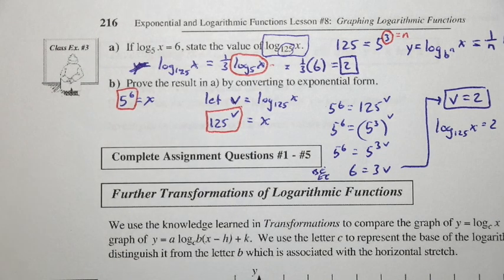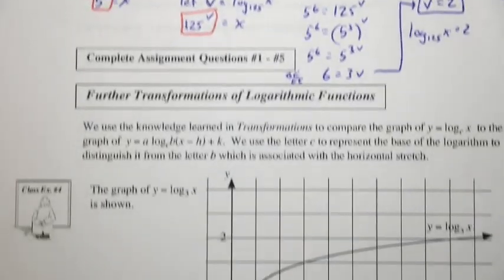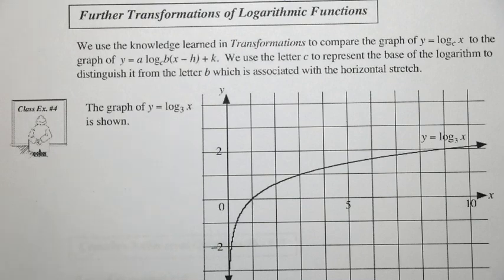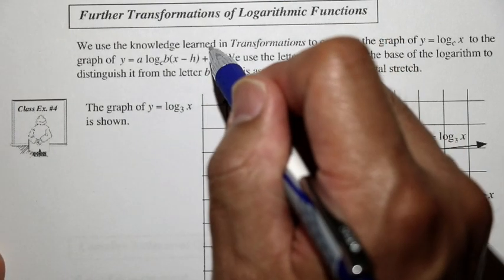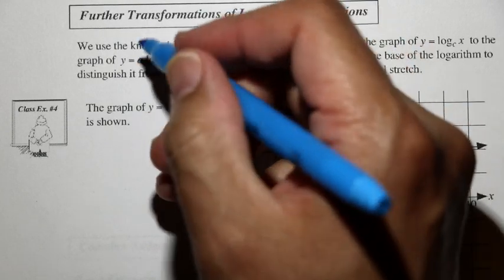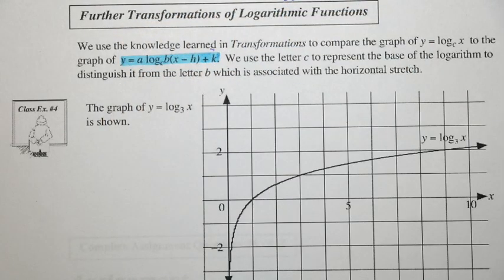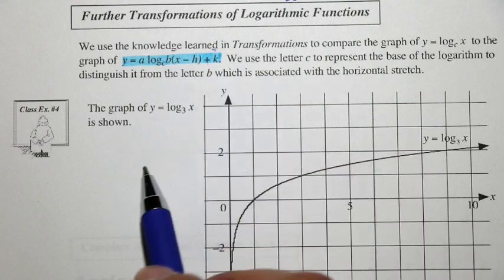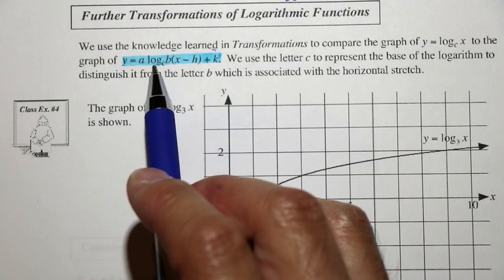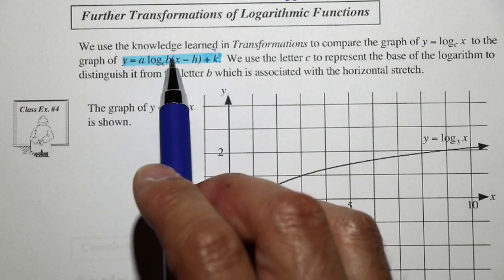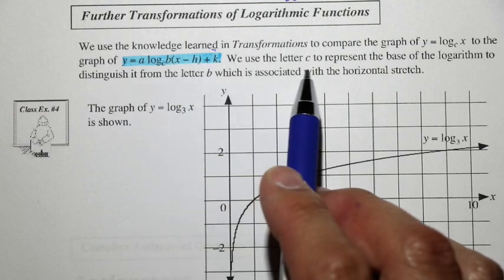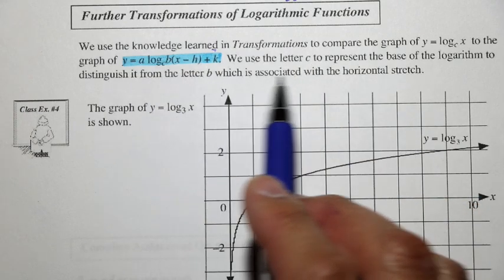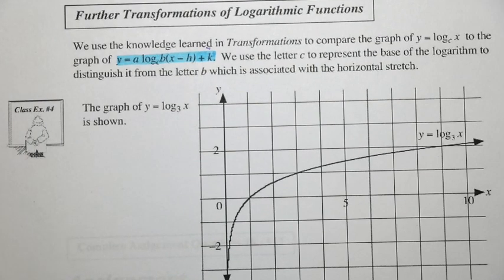Now let's talk about logarithmic functions in the context of transformations from a previous unit. Here is our general transformation equation: y equals a times log base c of b times x minus h, plus k. We use the letter c to distinguish it from the letter b used with horizontal stretch in a general function.